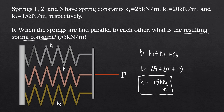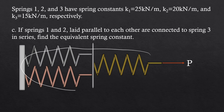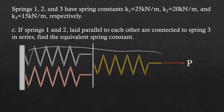This is relatively easy to get compared to letter A. For the last problem, if springs 1 and 2 are laid parallel to each other and then connected to spring 3 in series, we need to find the equivalent spring constant. Since springs 1 and 2 are in parallel, we first get their equivalent spring constant, then treat the whole system as a series connection.